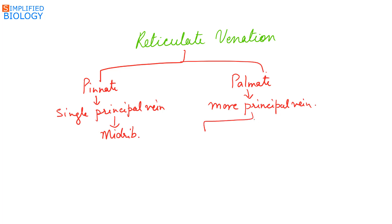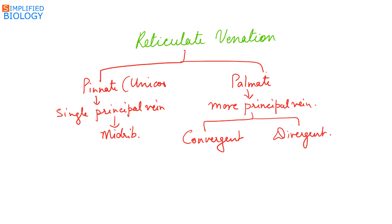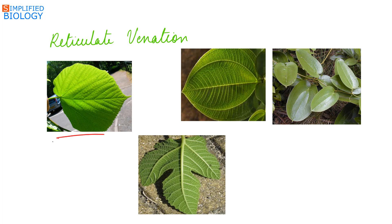Palmate is further divided into two types: convergent and divergent. Pinnate is also known as unicostal, meaning a single main vein is present, while palmate is known as multicostal, meaning more than one main veins are present. In pinnate reticulate venation, there is a single distinct midrib from which veins and veinlets develop to form a network in the lamina.